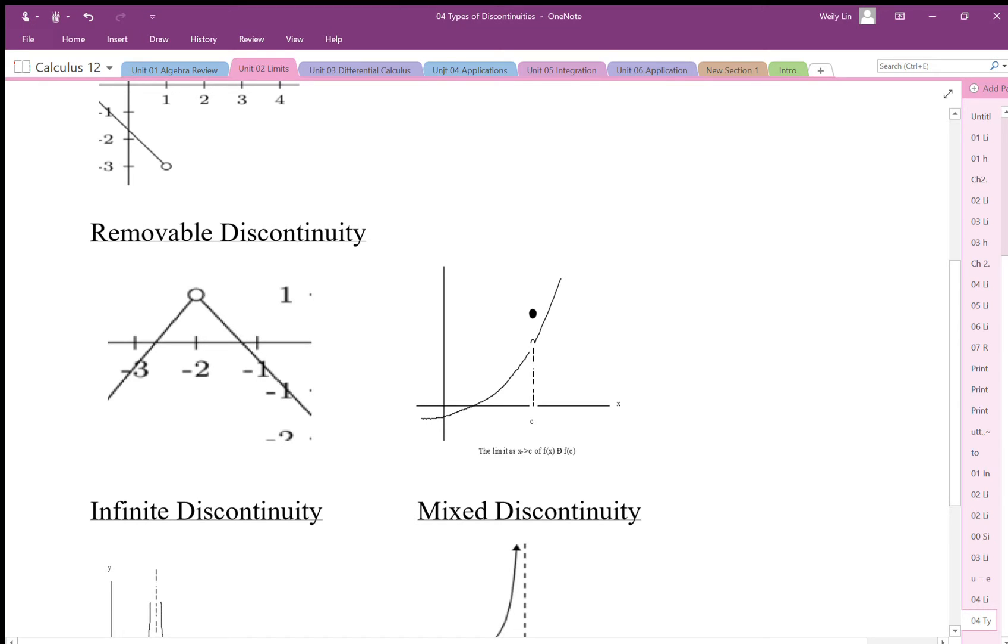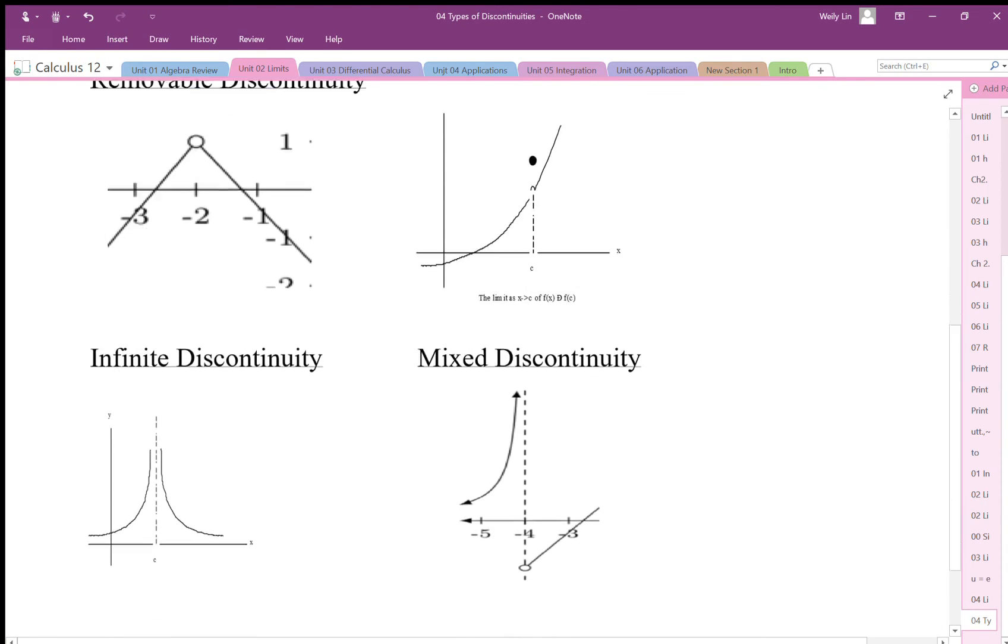Same here. Basically, we've removed a point out of here. Okay, we've taken this point, we're just taking it out. Okay, removed it. So it could disappear, or we can put it in a different spot like it's done here. So this is called a removable discontinuity.